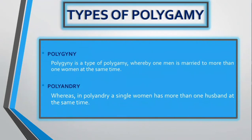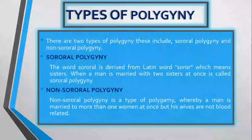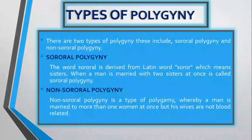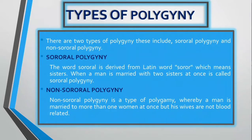There are two types of polygyny: sororal polygyny and non-sororal polygyny. The word 'sororal' is derived from the Latin word 'soror,' which means sister. When a man is married to two sisters at once, it is called sororal polygyny. Non-sororal polygyny is a type of polygamy whereby a man is married to more than one woman at once, but his wives are not blood related.